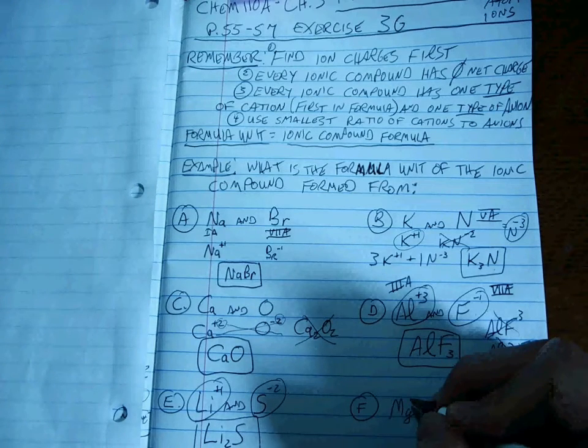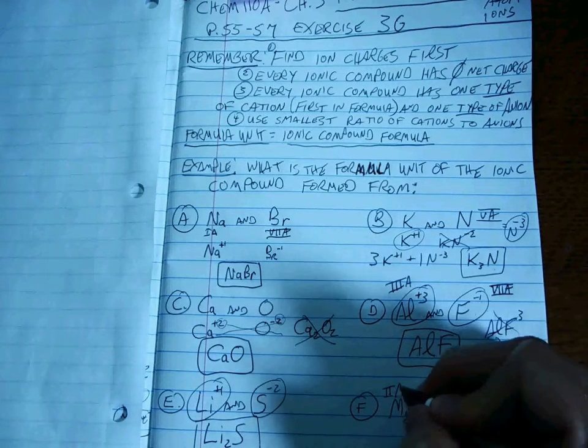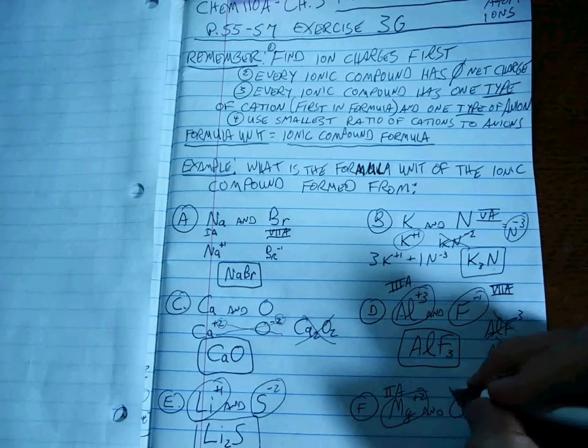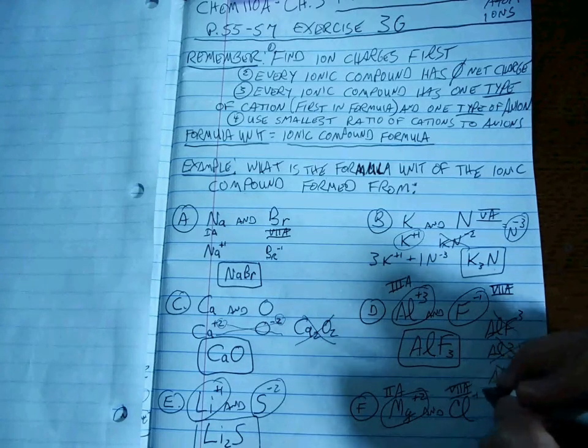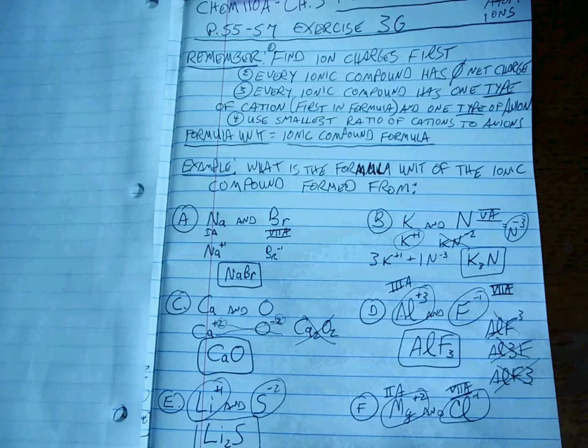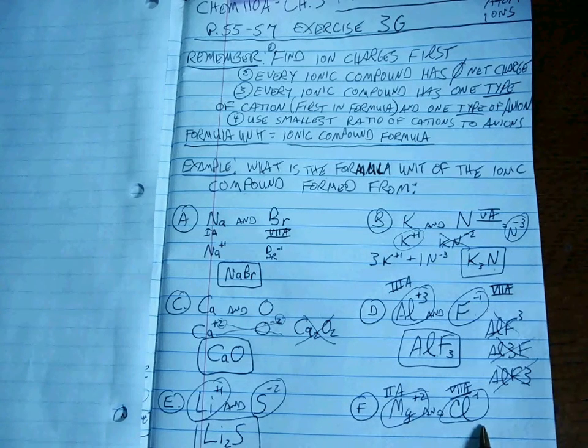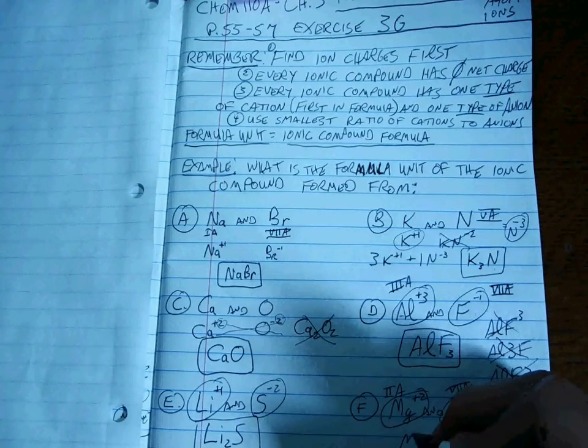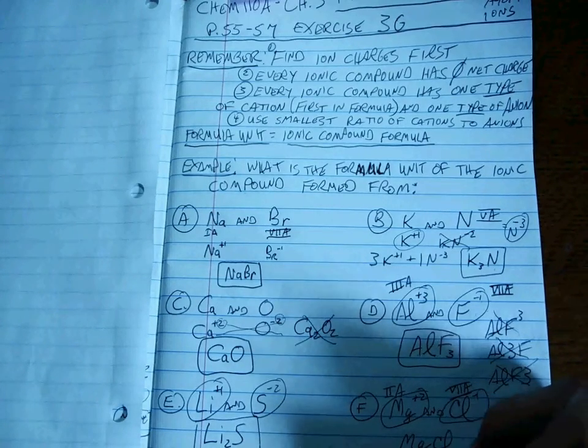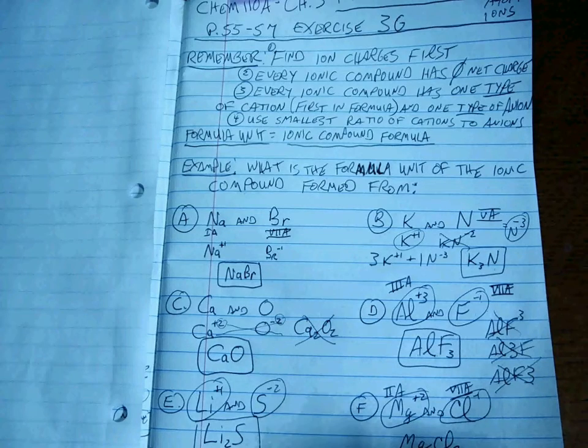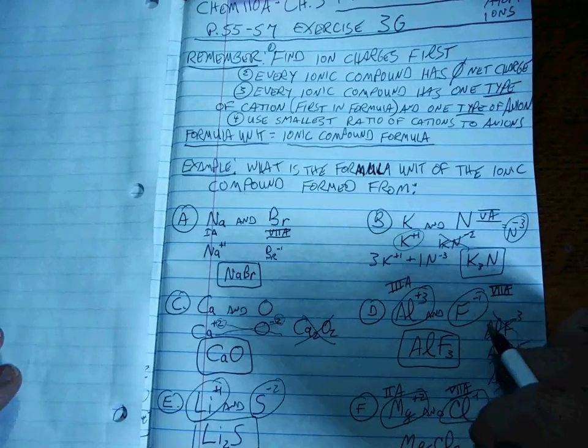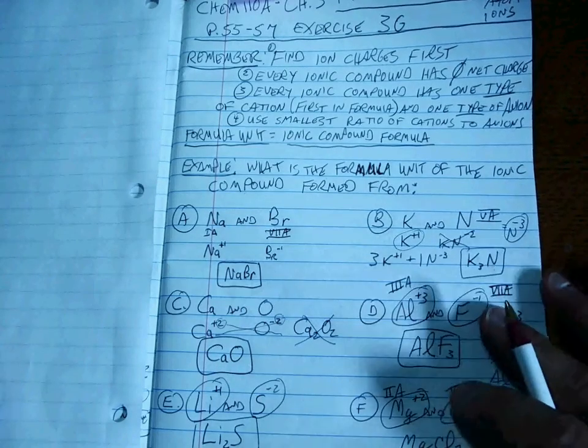Okay, one more to go. Magnesium is in group 2A, so it likes to make a plus 2 charge. Chlorine is in group 7A, so it likes to make a minus 1 charge. How do we do that ratio? Well, for every one of these, you need two of those. MgCl2. Okay. Real fast. Let's do one more quick one. Ready? Here we go.